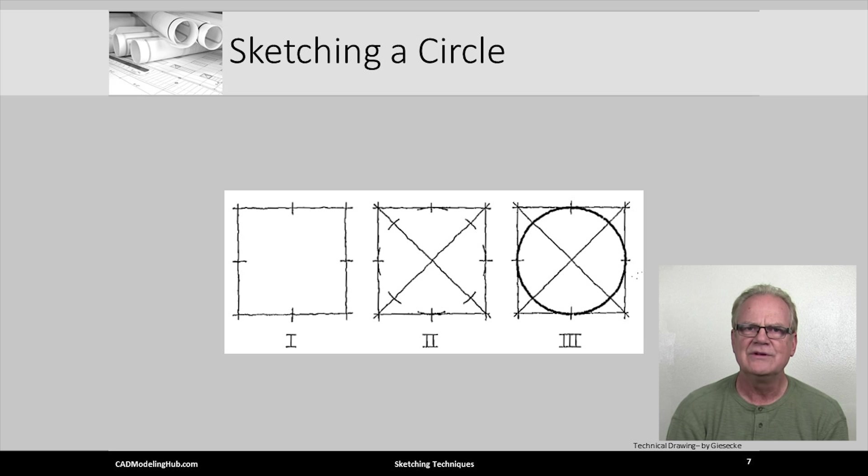Step 2, sketch diagonal lines. Marking each diagonal approximately two-thirds of the distance from the intersection or circle center. Step 3, sketch the circle.